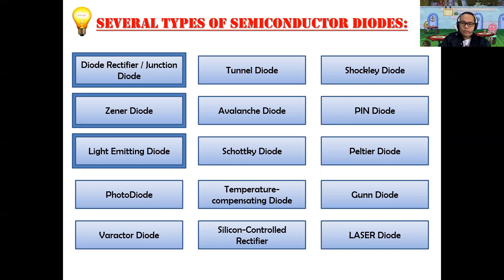The three most important types are the diode rectifier (or junction diode), the Zener diode, and the light-emitting diode. The other diodes you may encounter as you go along with other electronics engineering subjects and major subjects involving semiconductor devices and related electronics engineering applications.